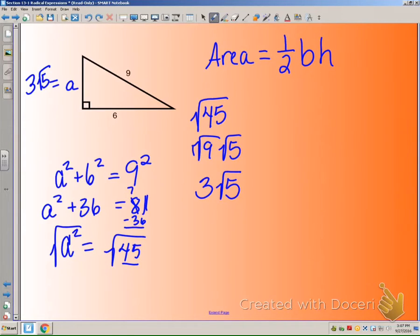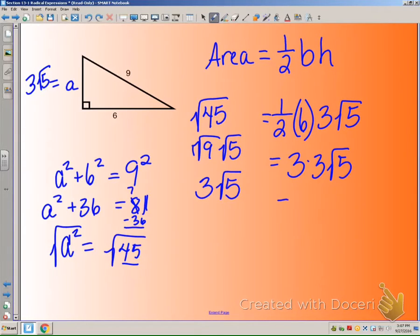So now, I can solve. What is the area? Well, the area is one-half of the base. My base is six times my height, which is three square root of five. Half of six, we know, is three. Three times three times the square root of five is equal to nine square root of five. And since we're talking about area, I know I want it to be units squared. And there is my area of my triangle in simplest radical form.